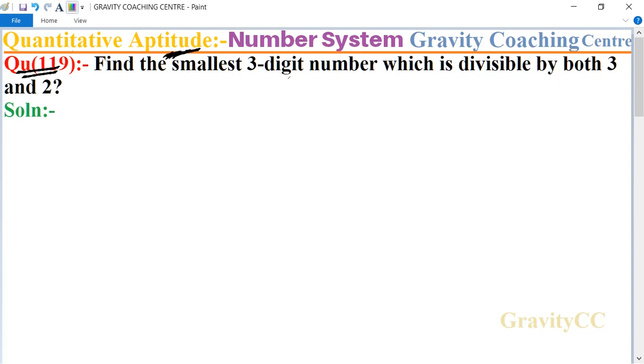In this question, find the smallest three-digit number which is exactly divisible by 3 and 2. We know that the smallest three-digit number is 100.